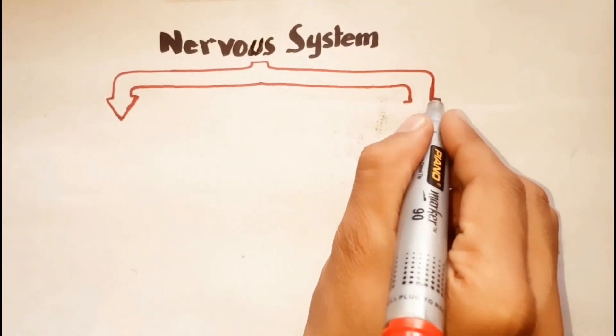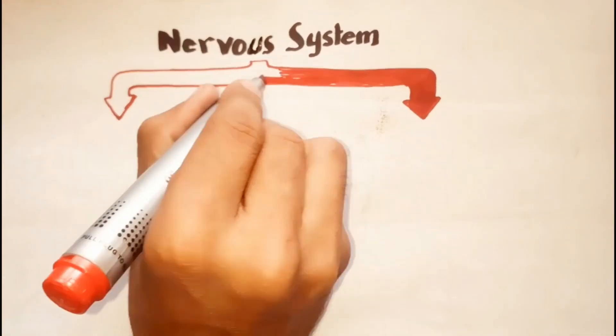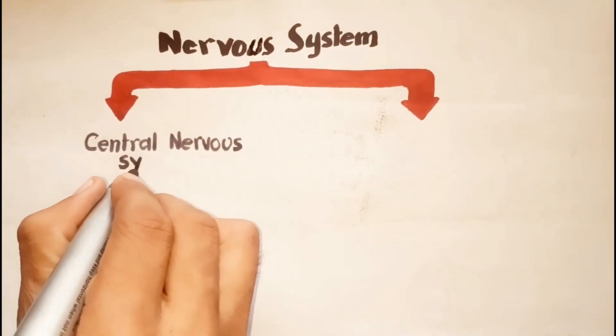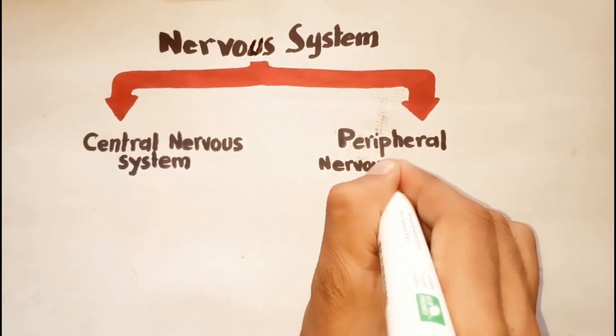The nervous system is basically divided into two anatomical divisions: the central nervous system and the peripheral nervous system.